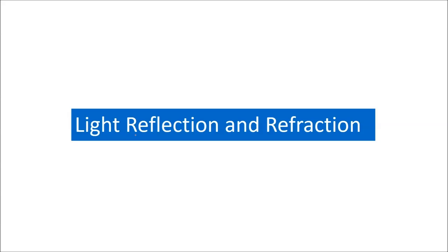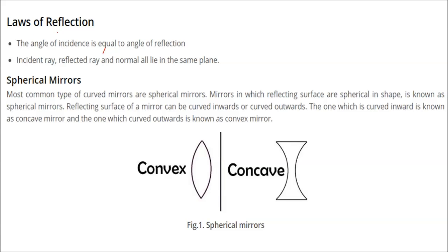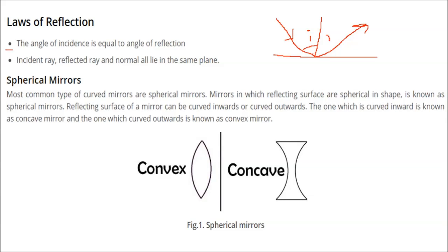We are discussing light reflection and refraction. The first law of reflection states that the angle of incidence is always equal to the angle of reflection. If this is a plane and this is the normal to the plane, if a ray comes here at angle i, and reflects at angle r, then i should be equal to r. Angle of incidence should be equal to angle of reflection.